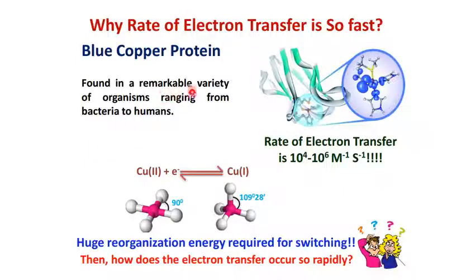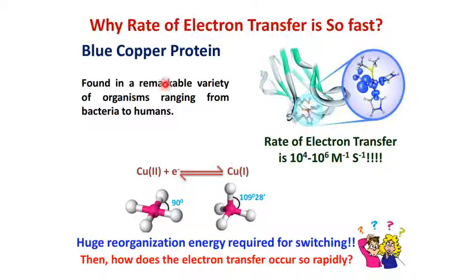Blue copper proteins are found in a remarkably wide variety of organisms, ranging from bacteria to humans. They consist mainly of a copper metal ion where copper is present in two different oxidation states. In the oxidized form, copper is in the plus 2 state; in the reduced form, it is in the copper 1 state. Blue copper protein utilizes this electron transfer phenomenon, found across bacteria to humans.